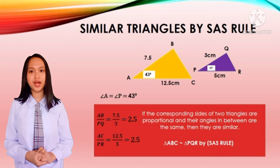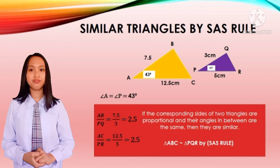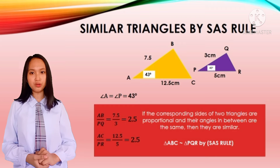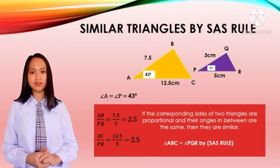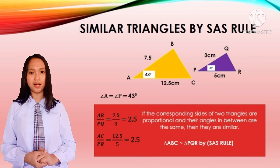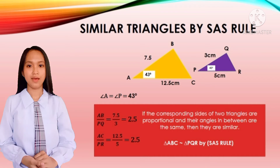Similar triangles by SAS rule: if the corresponding sides of two triangles are proportional and their angles in between are the same, therefore these triangles are similar by SAS rule.